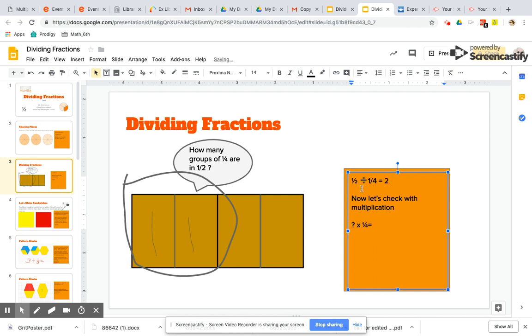We're going to check again with multiplication. So we take our quotient, which is two. We're going to multiply it by one fourth. I'm going to make two into a fraction. So it's two over one. And then I can multiply across, multiply the numerators here, two times one equals two. And then one times four equals four.